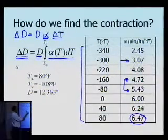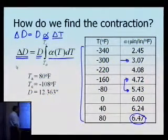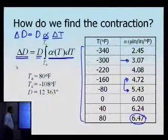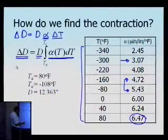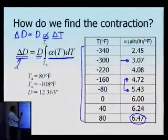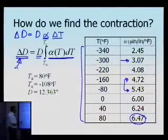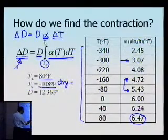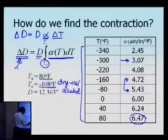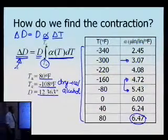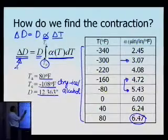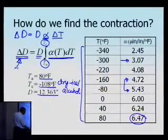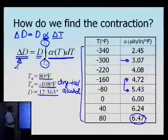One way to solve this problem is by regressing the discrete data given to us to a regression model for alpha. If we can do that, then we can simply integrate it using integral calculus. To appreciate this, we need all inputs to calculate delta d, which we want to be at least 0.015 inches. We are given that room temperature is 80 degrees Fahrenheit, the dry ice and alcohol mixture temperature, and the diameter of the trunnion.